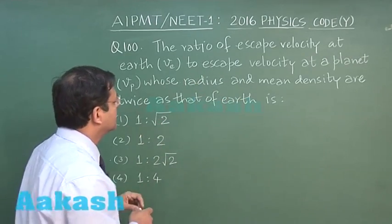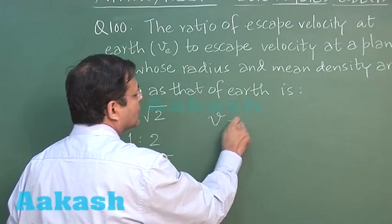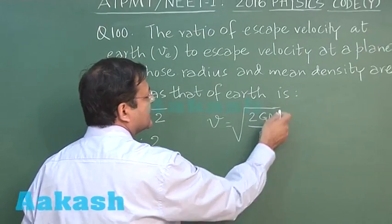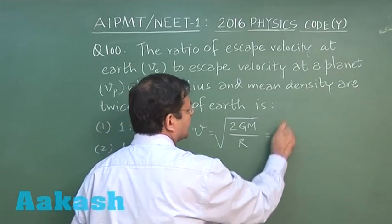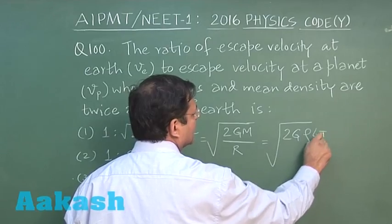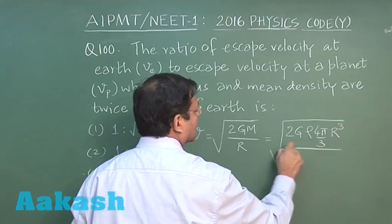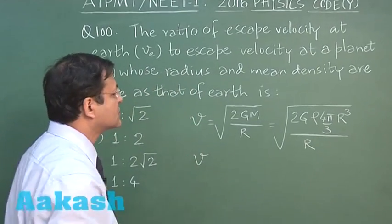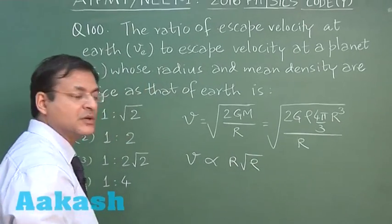So you have to start using the expression for escape speed as under root 2 g m by r, but instead of mass it has to be replaced by density. So if I do that, I can write it as under root 2 g density into 4 by 3 pi r cube upon r. So ultimately you will find that the escape velocity is becoming proportional to r and under root of density.